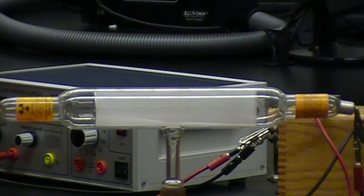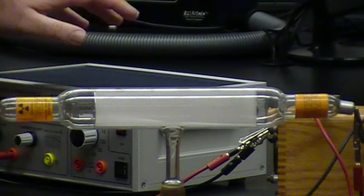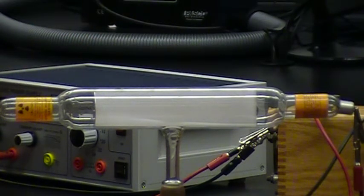What I have here is a cathode ray tube, and this cathode ray tube basically is having some current run through it with a power supply that I have over here.